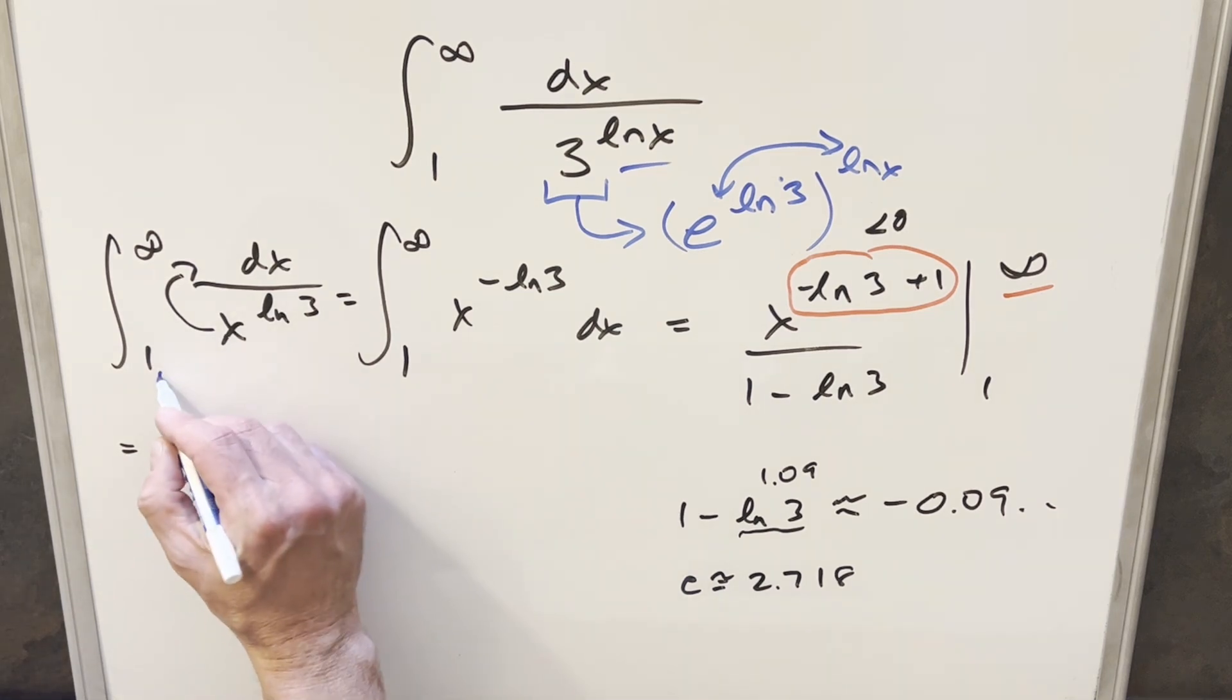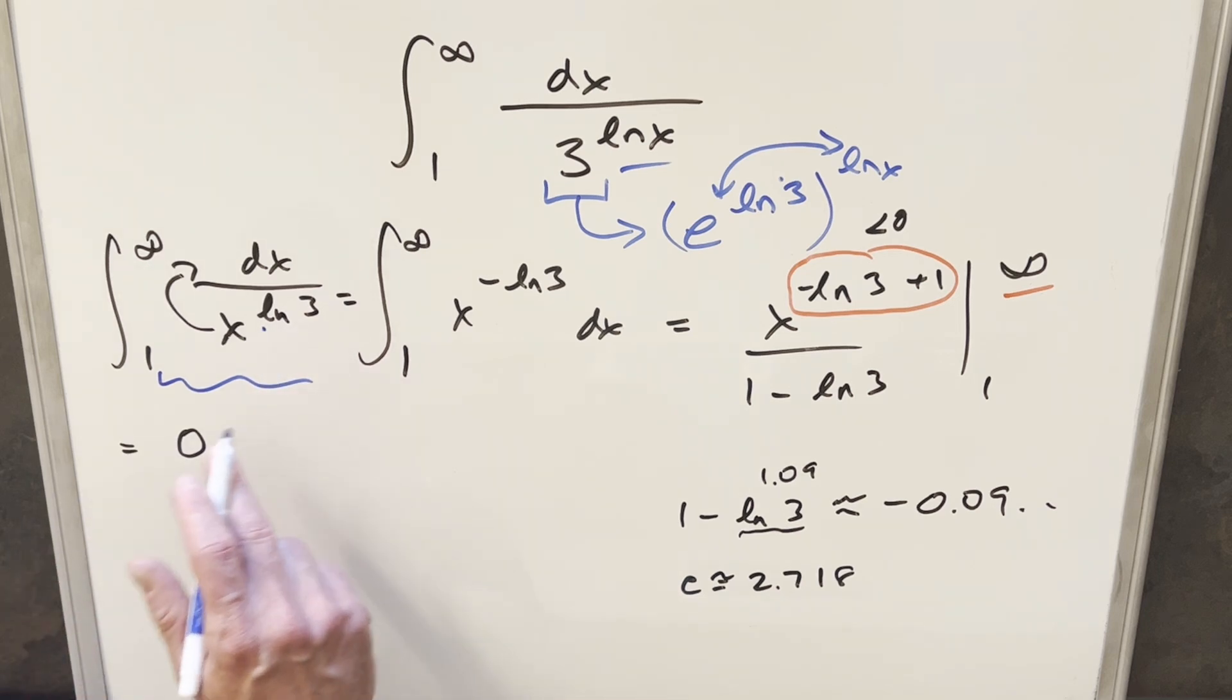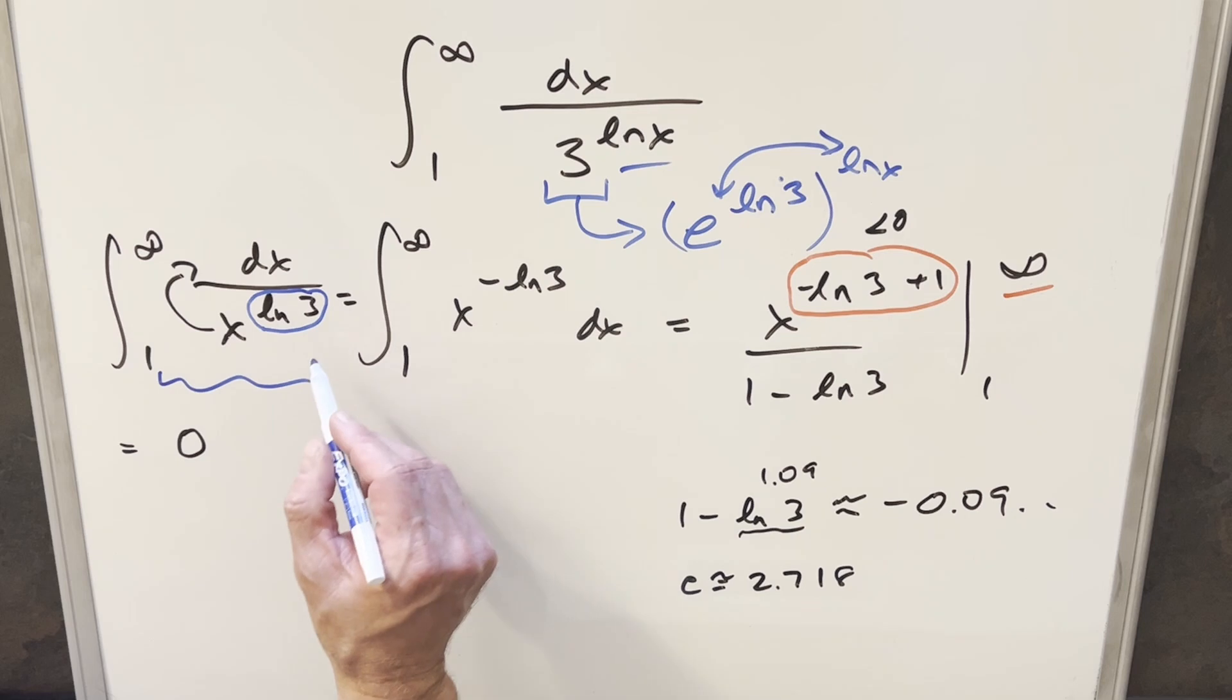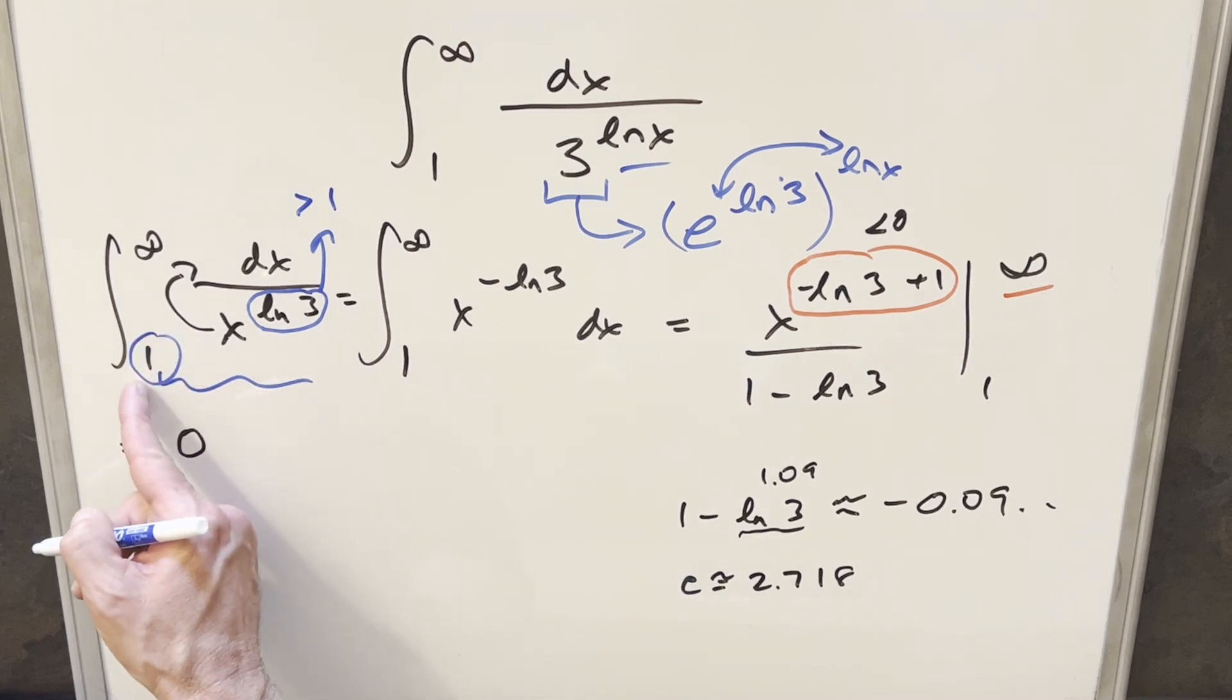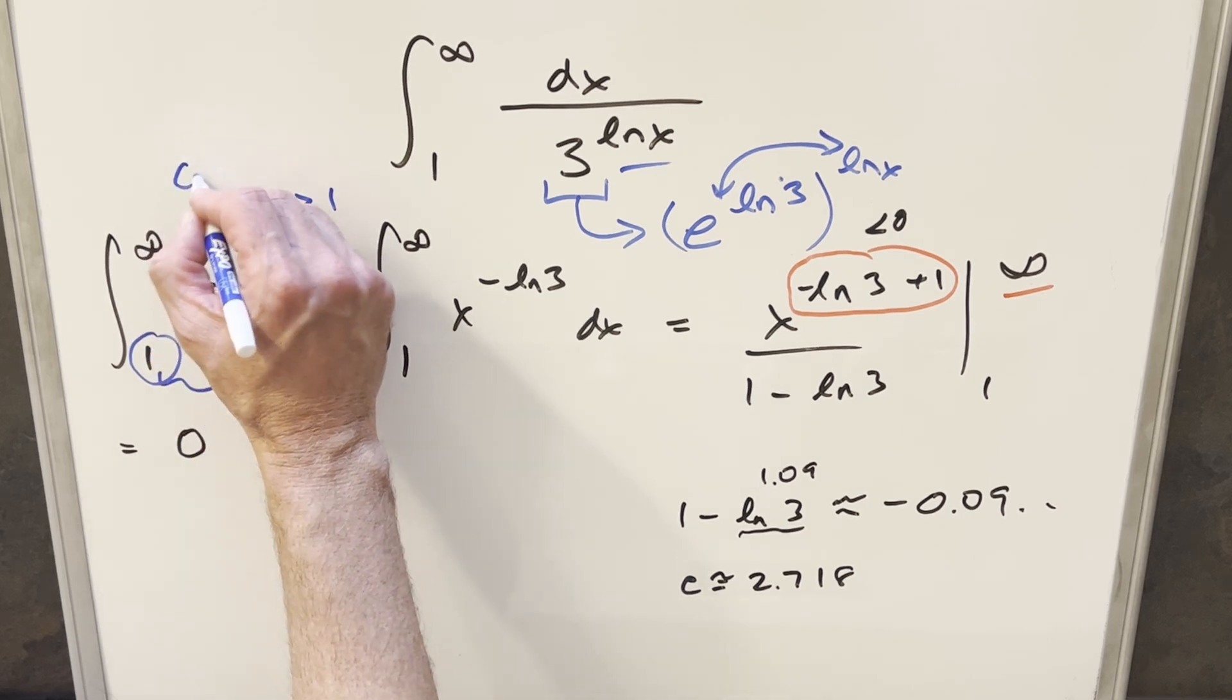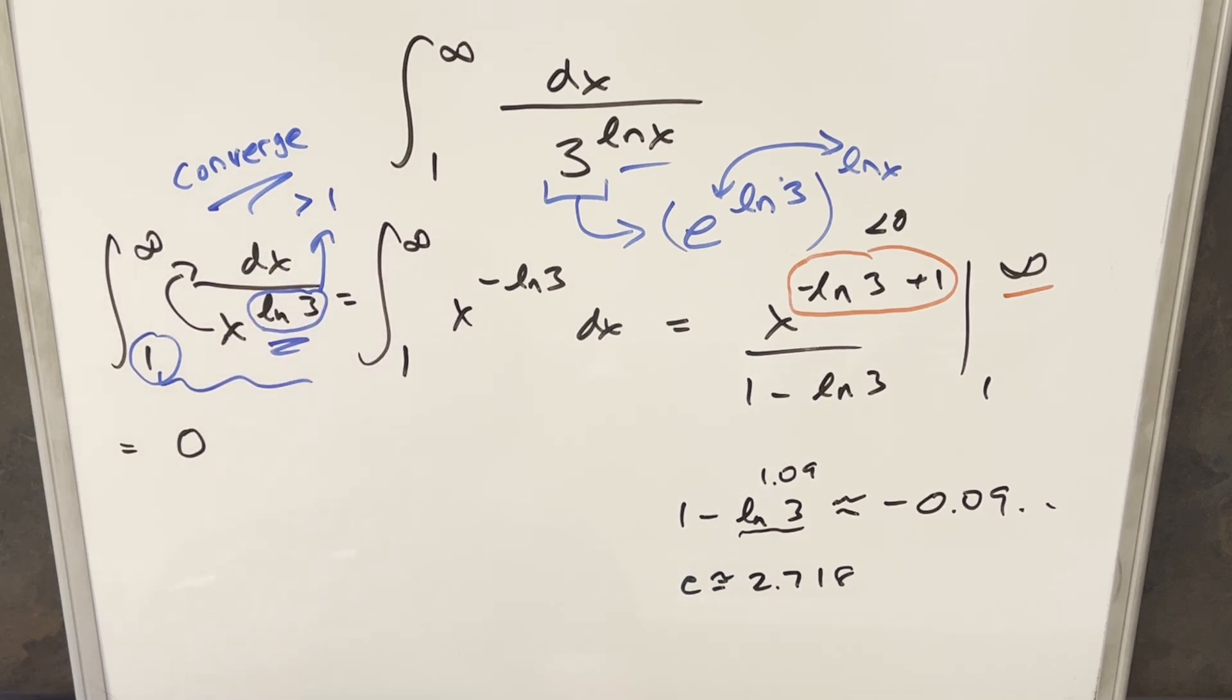One other way you could look at this is coming back to this integral over here and just looking at this. For an integral in this form, we actually have the p-test for convergence where we just check the exponent on the x. And the test is, is this value less than or greater than 1? Well, ln 3 is greater than 1. And with our lower bound, some value, it doesn't have to be 1. It could be any constant value that's greater than 0. Then because this is greater than 1, the test tells us that this integral here is going to converge. It doesn't tell us what it's going to converge to. It just tells us this will converge. And that's why this works right here.